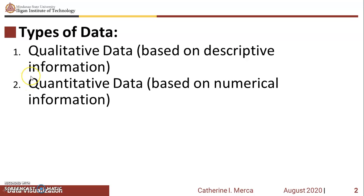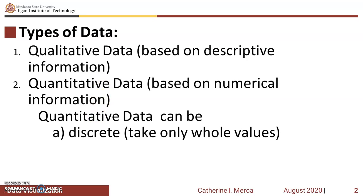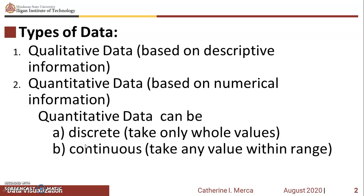We also have what we call quantitative data, which are based on numerical information. For example, the scores of students from 0 to 50, from 51 to 100, or the number of students who get scores in those ranges. There are types of quantitative data: it can be discrete, which only takes whole values, and also continuous, which takes any value within a range. Discrete means whole numbers that can be counted, and continuous means the data can be measured.